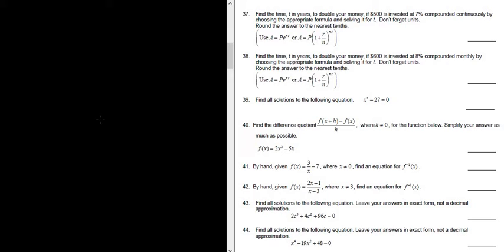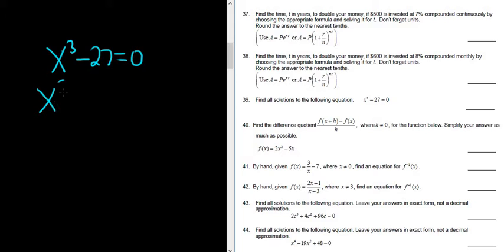Problem number 39: find all solutions to the following equation. The equation is x cubed minus 27 equals 0. Here what we have is the difference of cubes. We can write this as x cubed minus 3 cubed, because 3 cubed is equal to 27.